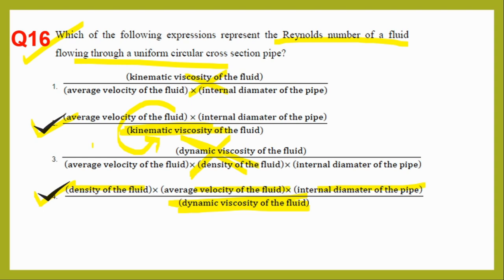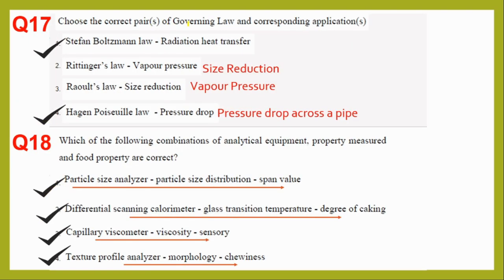Question seventeen asks for correct pairs of governing law and corresponding application. Stefan-Boltzmann law — radiation of heat transfer — correct. Rittinger's law — vapor pressure — no, Rittinger's law is for size reduction, not vapor pressure. Roll's law is also never for size reduction. Hagen-Poiseuille law — pressure drop — correct. Two options are wrong and two are right: Stefan-Boltzmann and Hagen-Poiseuille are the correct pairs.